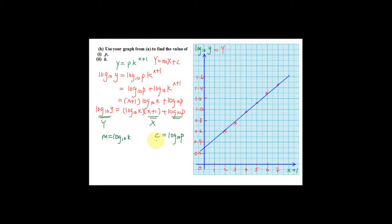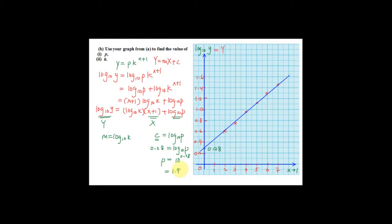Now we find the vertical intercept on the graph, which is roughly 0.28. So c equals 0.28, which equals log 10 p. Therefore p equals the antilog of 0.28, which is 10 to the power 0.28, giving p equals 1.905.